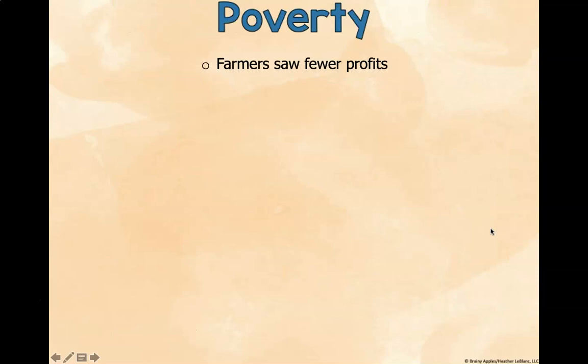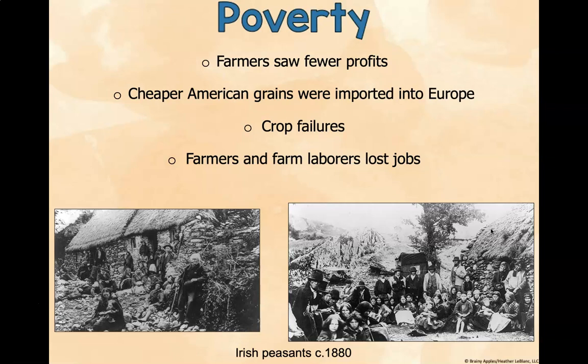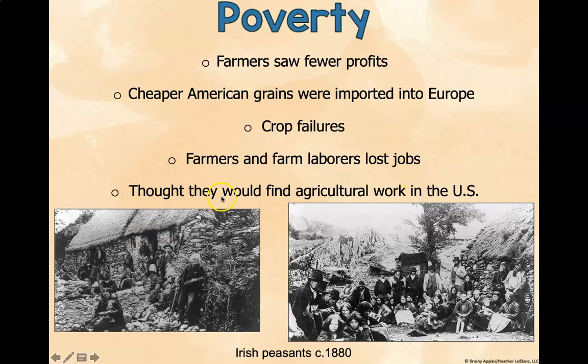Poverty was another push factor. Farmers saw fewer profits as cheaper American grains were imported into Europe, causing crop failures, and many farmers and farm laborers lost their jobs. These are Irish peasants in 1880. My family, for example, descended from Scots-Irish. They thought they would find agricultural work in the United States.